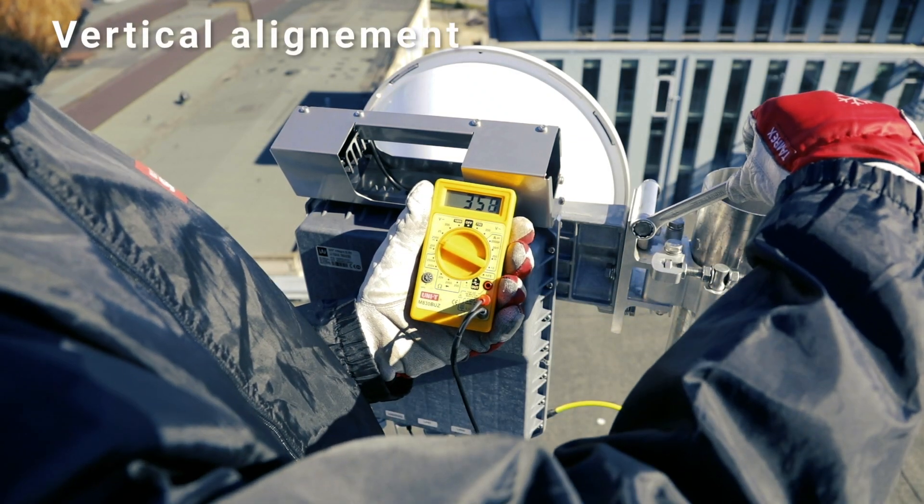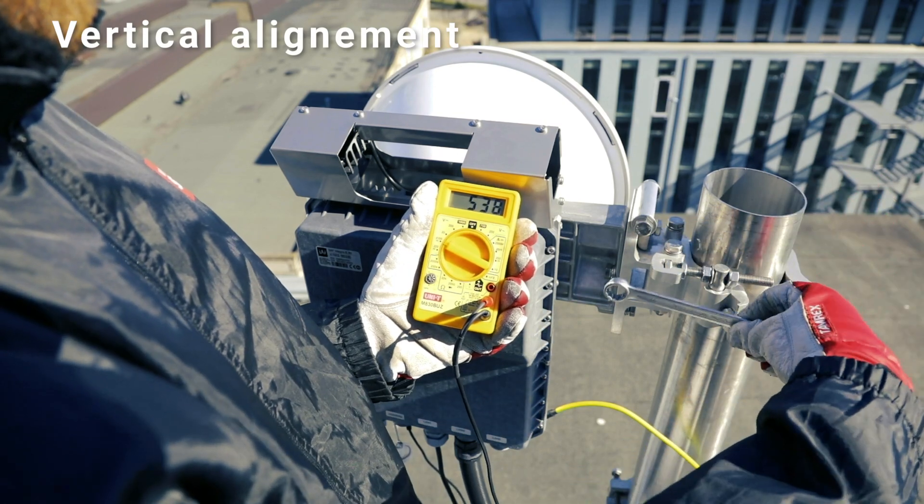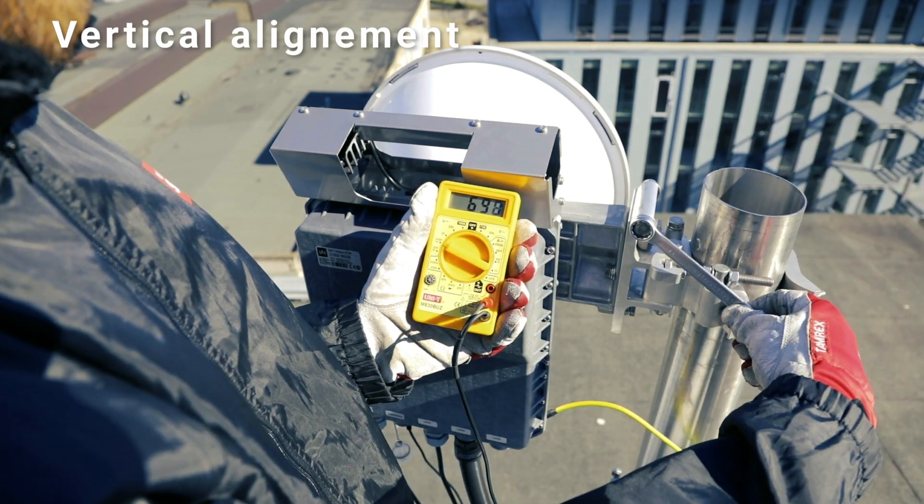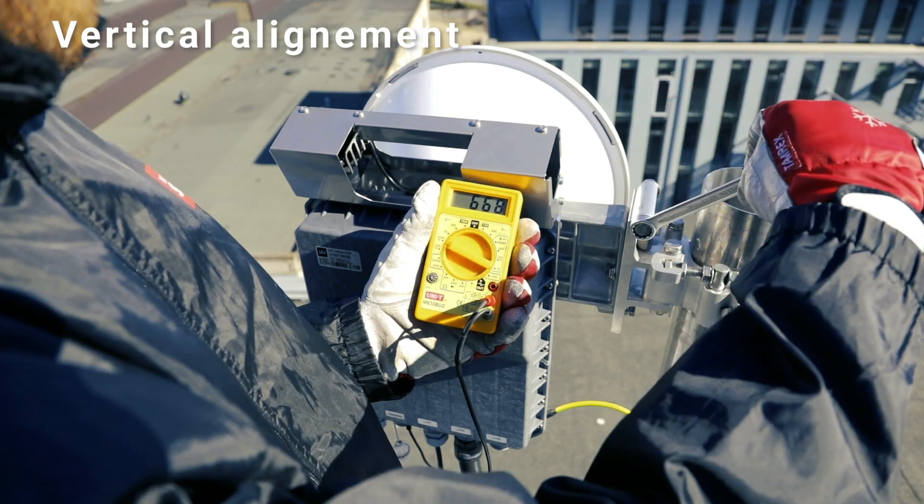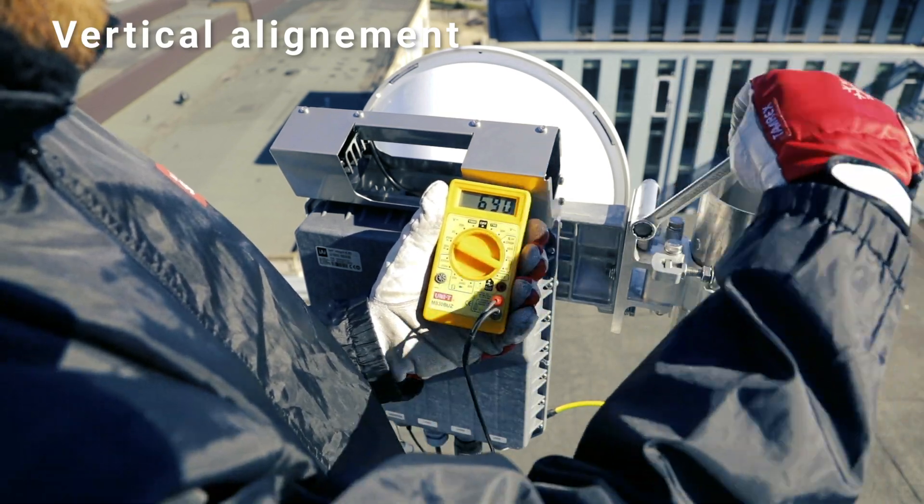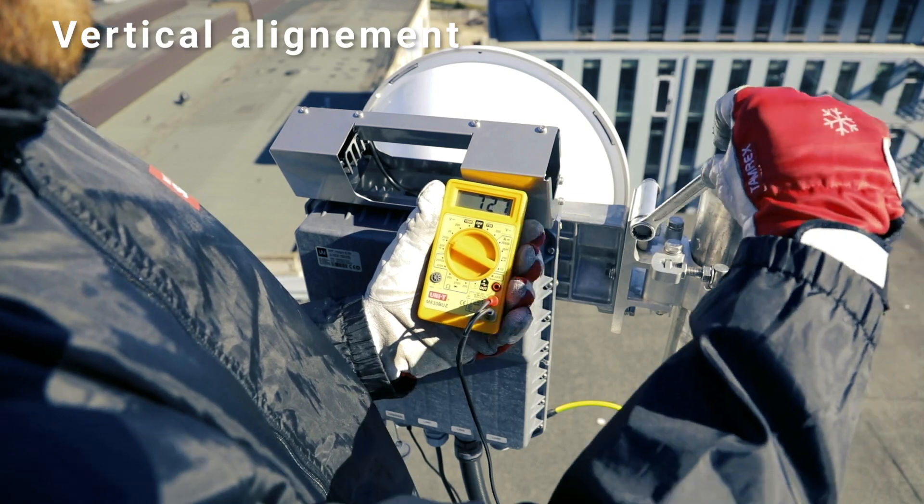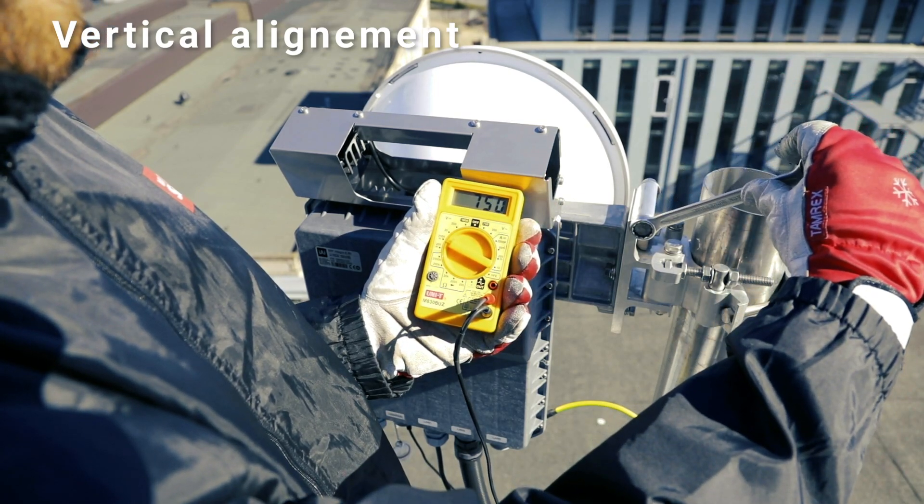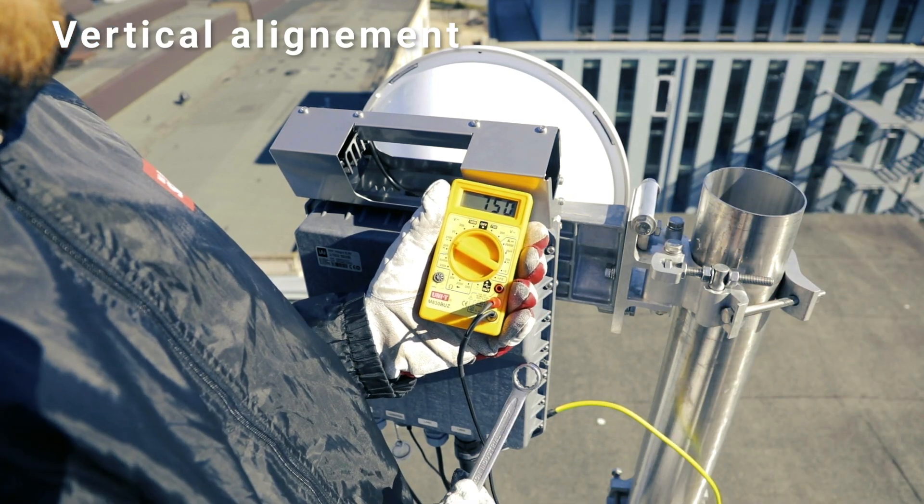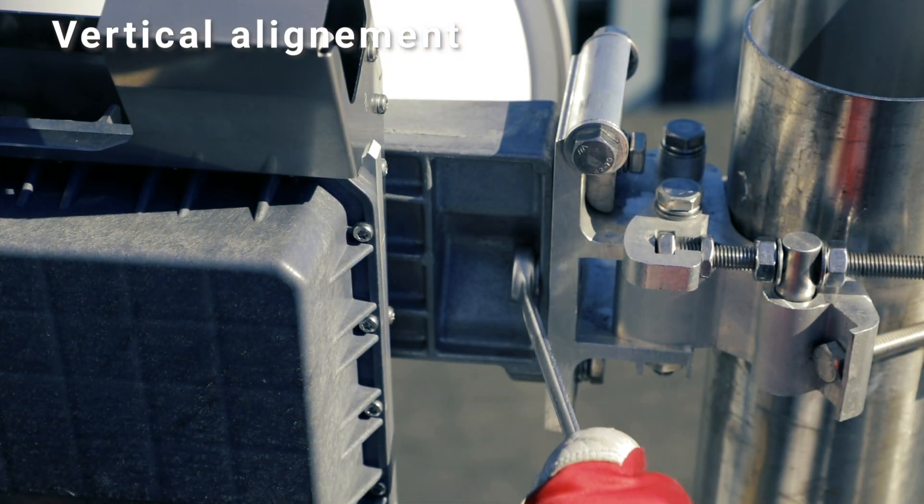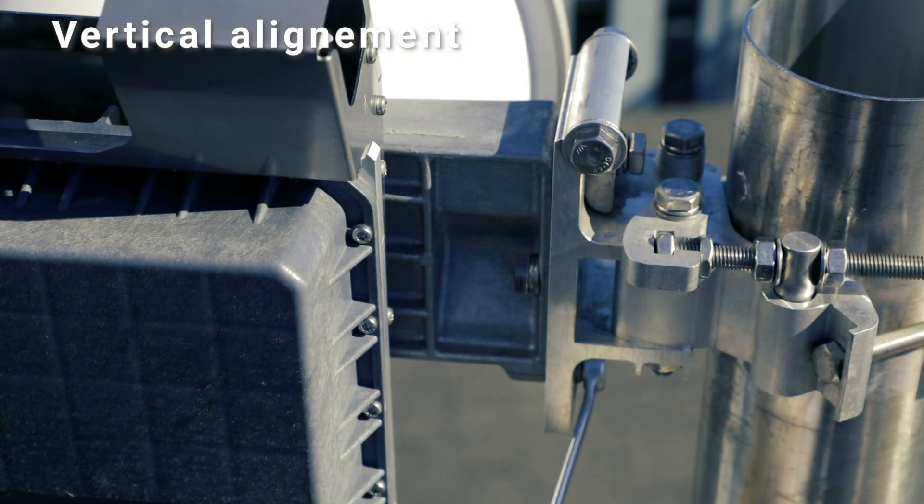Loosen the elevation screws and perform a full vertical sweep by moving the antenna in the vertical plane. Start by moving the antenna from the upper side to avoid alignment to a signal reflected from the ground. Look at the voltmeter and try to catch the moment where the received signal is the best. Then, secure the fixation screws for the elevation plane.